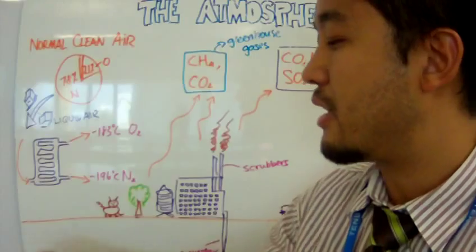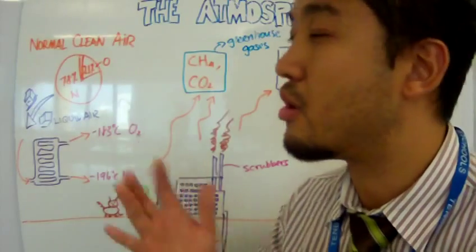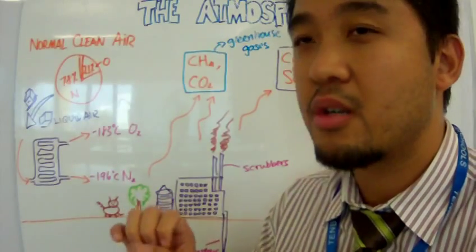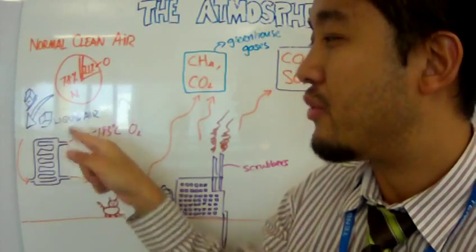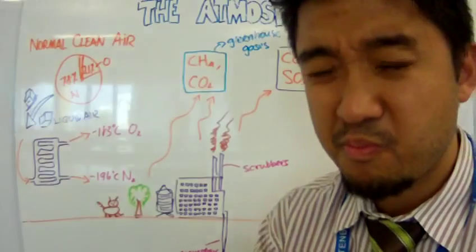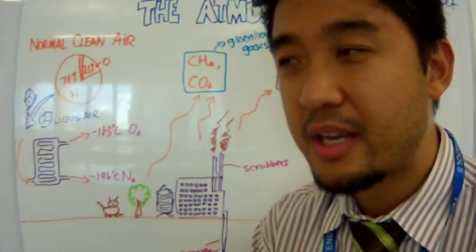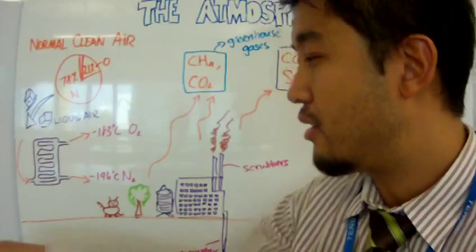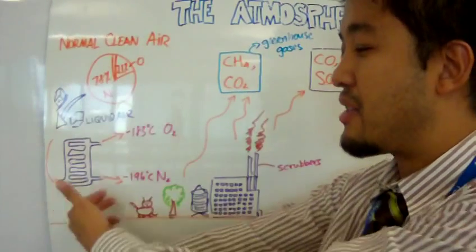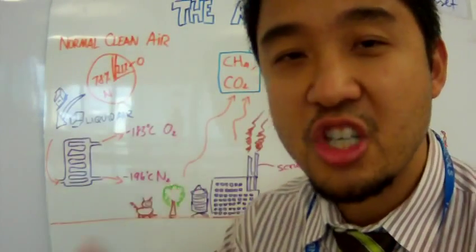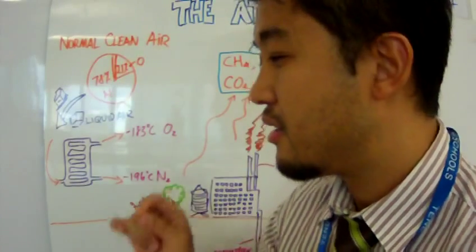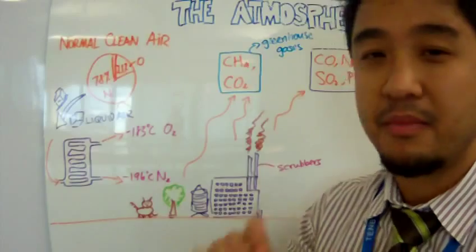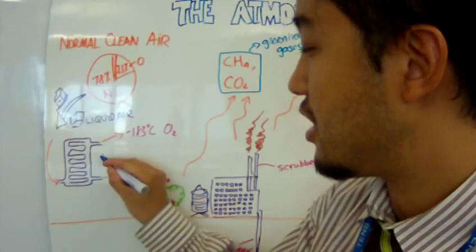Clean air is just out there, so people actually go and collect it and then liquefy it. That means they freeze it all the way down to negative 200-something degrees, and then pass it through a fractional column. Let me get a pen — a fractional column.